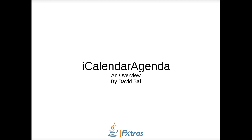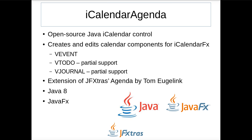Hello, I'm presenting an overview of iCalendar Agenda. iCalendar Agenda is an open source iCalendar control written in Java. It creates and edits calendar components for iCalendar FX, such as VEvents, VTodos, and VJournals. There is complete support for VEvents. However, VTodos and VJournals can be displayed and edited, but not created. It is an extension of JFXtra's Agenda, and utilizes features of Java 8 and JavaFX.